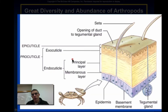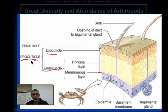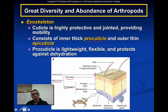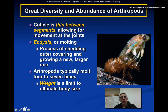The pro-cuticle is represented in the diagram from approximately here to here, and the epicuticle is a very thin layer right on top of it. The pro-cuticle is somewhat lightweight, relatively flexible, and helps protect the animal from dehydration. The cuticle is thin between the segments because those appendages and the whole animal need to be able to move in different configurations.